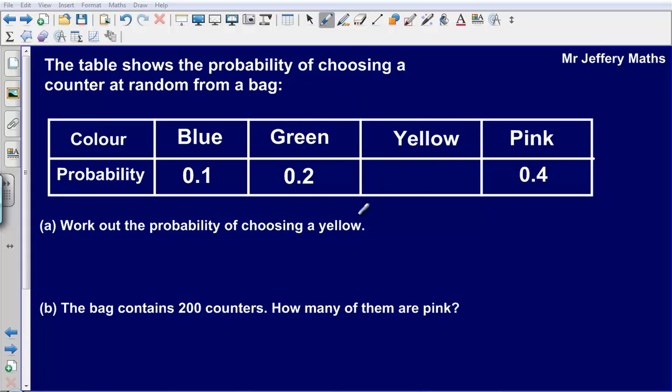And then we're asked first of all to work out the probability of choosing a yellow. Now the thing to remember here is that probabilities sum to 1. So these four numbers in this row here need to add up to 1.